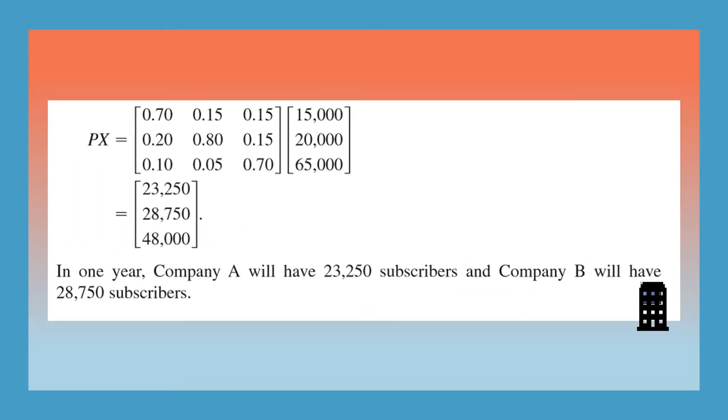To find the state matrix representing the population in three states after one year, we have to multiply P by X. So this PX gives us 23,250 subscribers in company A, 28,750 subscribers in company B.